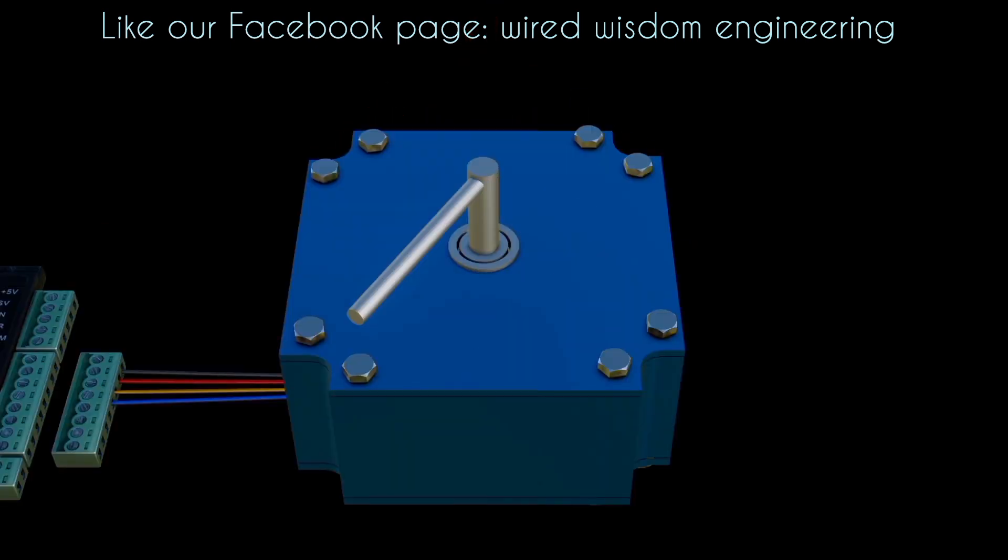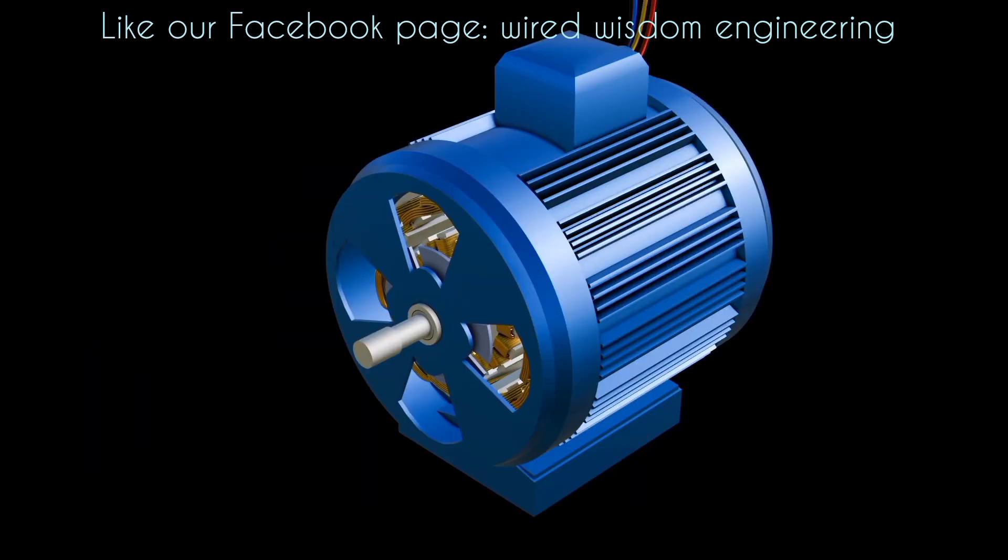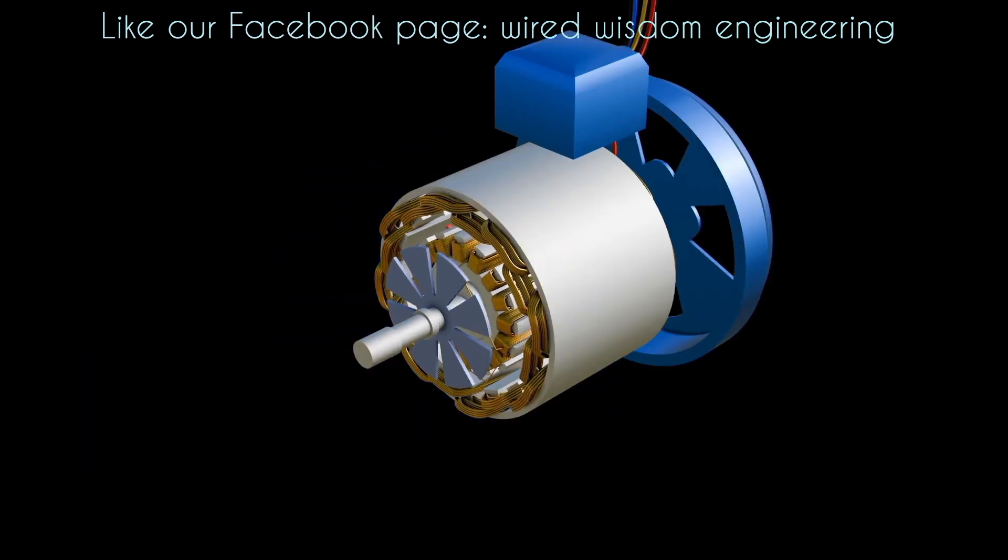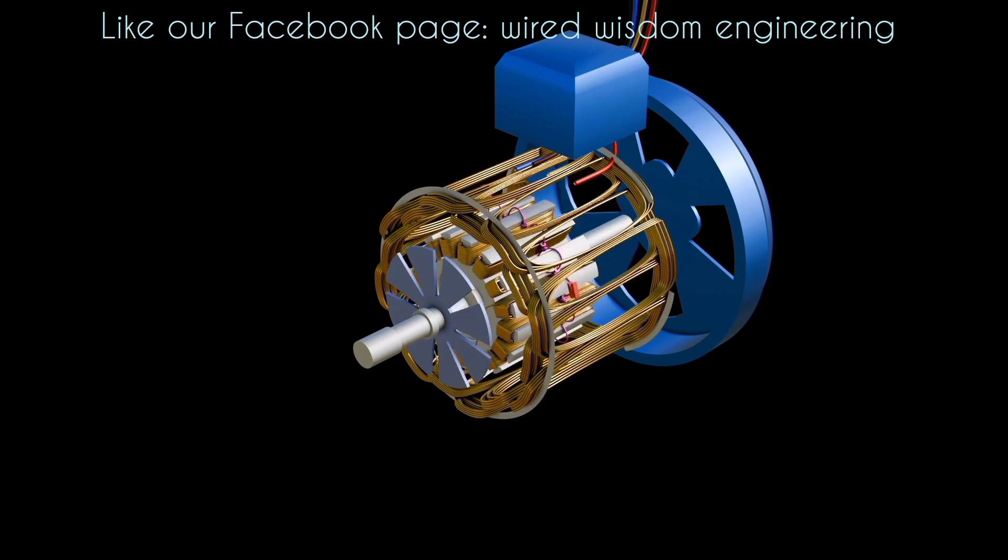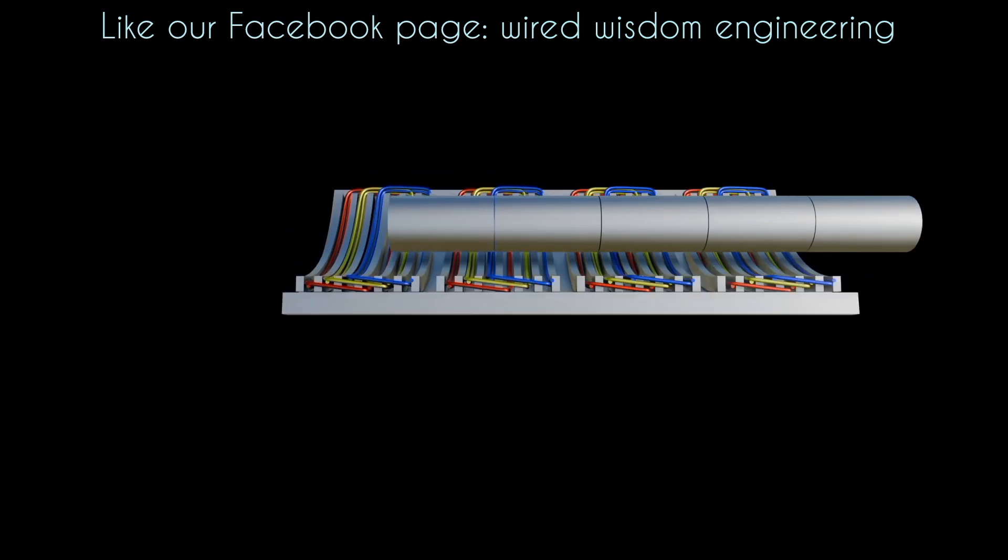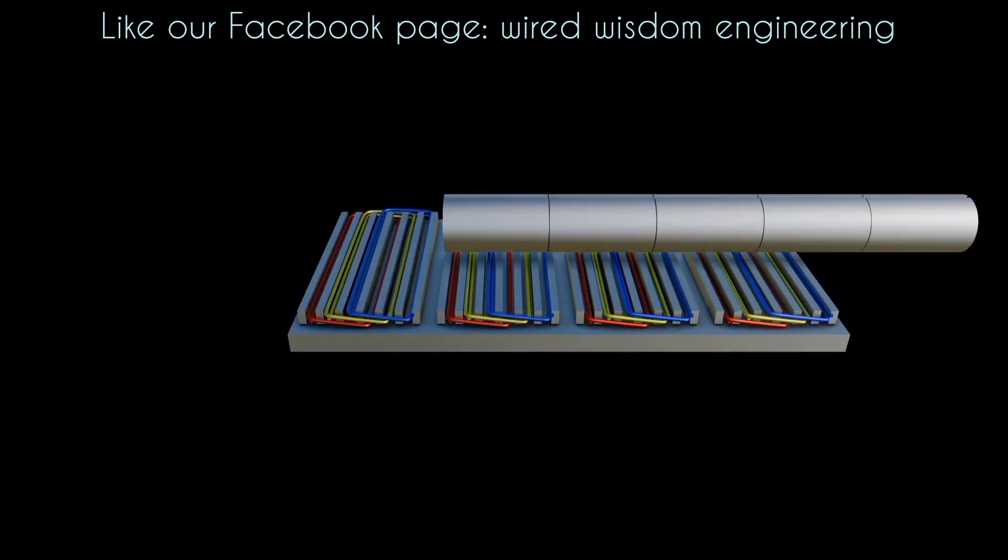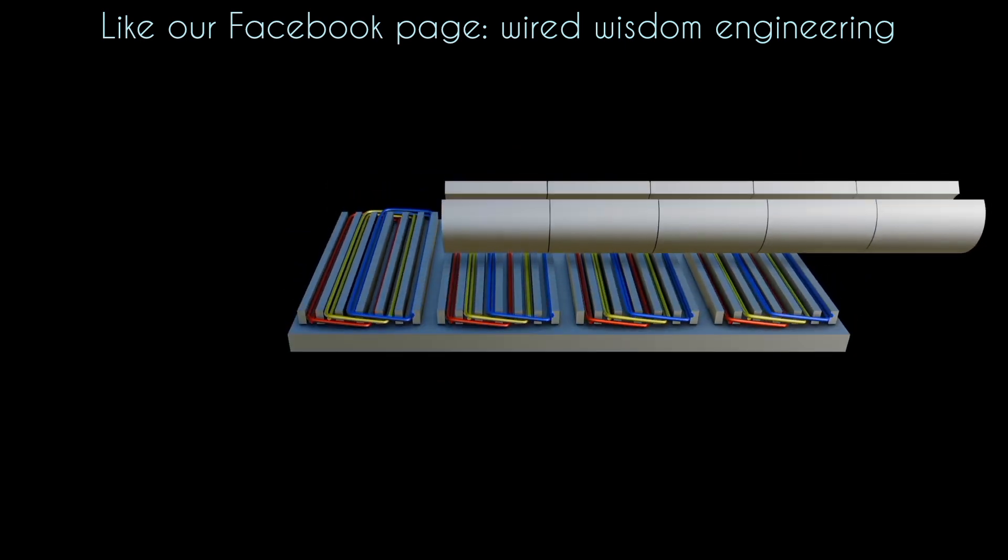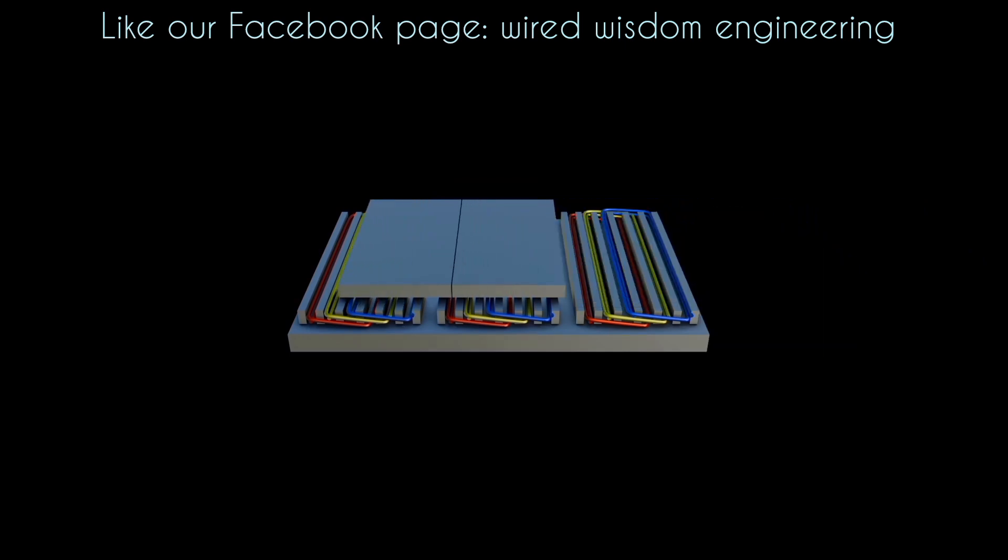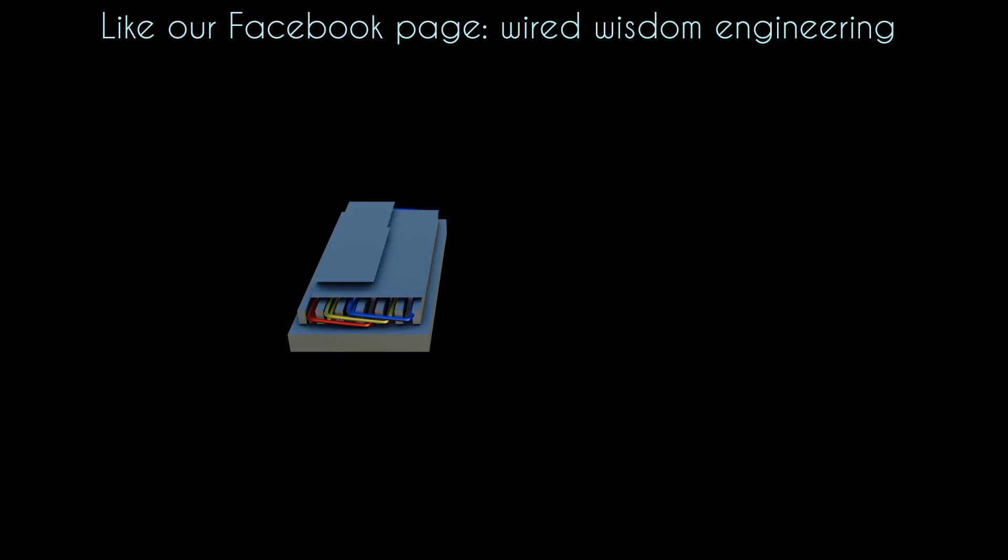The construction of a linear motor is quite similar to a three-phase induction motor. For instance, imagine that the stator of the induction motor is cut and spread out flat. This forms the primary of the linear motor system. Similarly, if the rotor is cut and spread out flat, it forms the system's secondary. As a result, the primary and secondary of a linear motor are flat and appear in the form of a sheet.